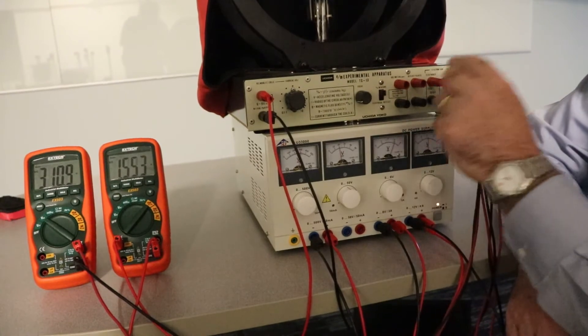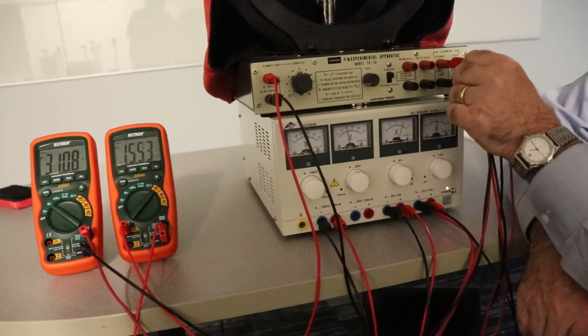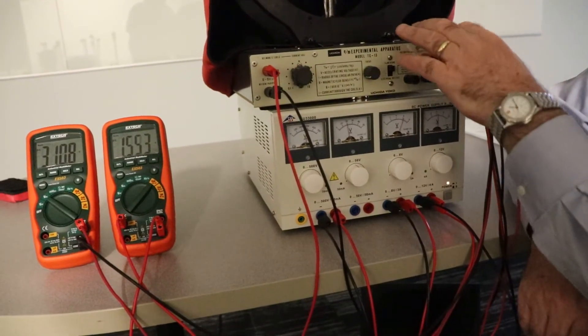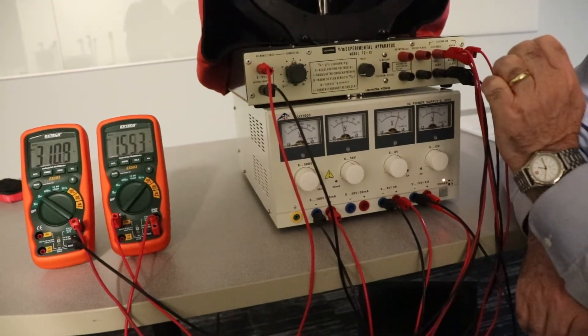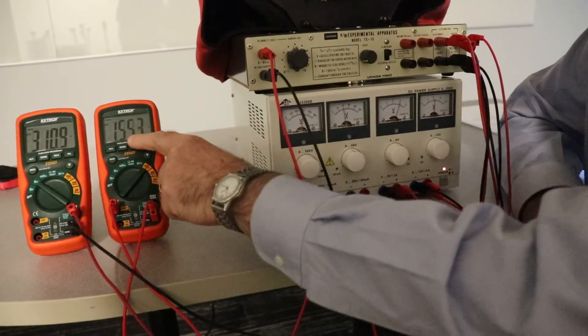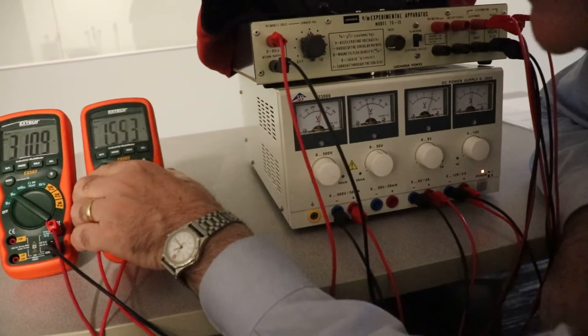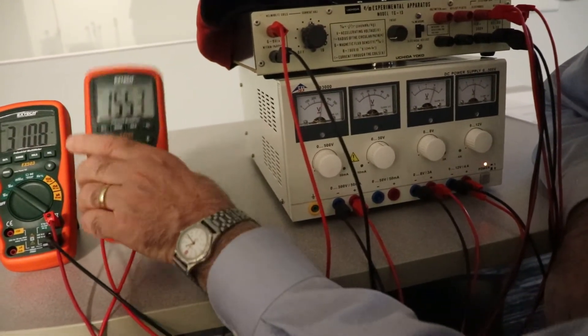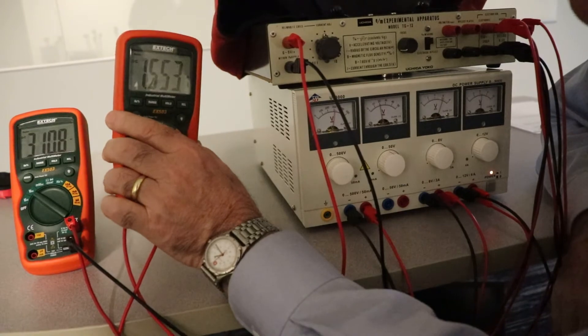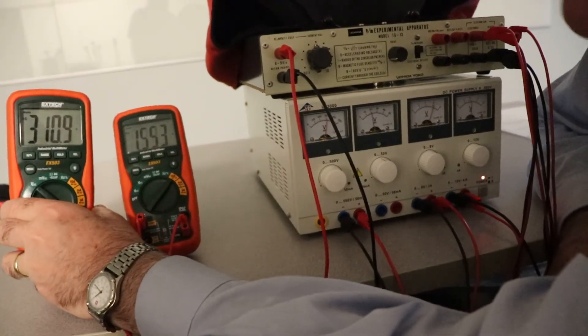And then over here, you can hook up a voltmeter here, but we didn't do that. We just took the voltmeter up, this guy right here, right across the accelerating voltage, the electron gun. So right across here, we got 155—actually, this was the current. This was the Helmholtz current. This is 1.553 amps.